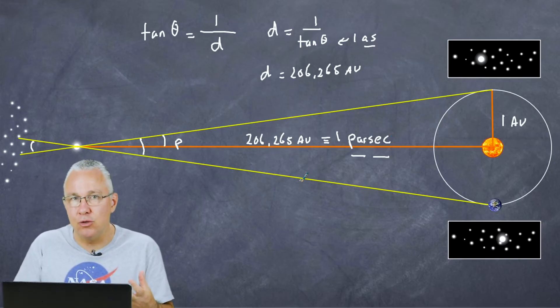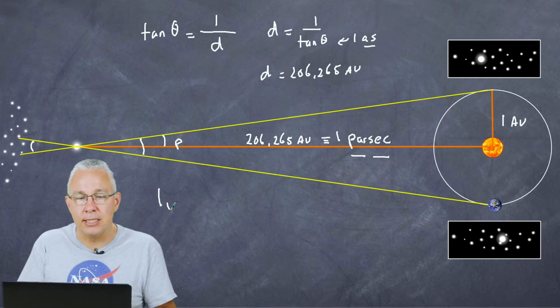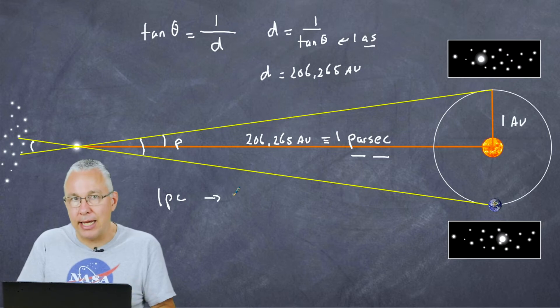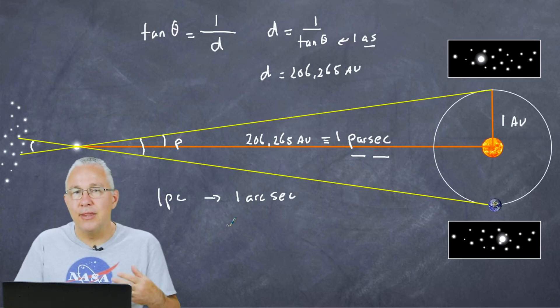So now what we have is a new unit that we can use for distances. In essence, what we have is one parsec is basically the distance where you have a parallax of one arc second.